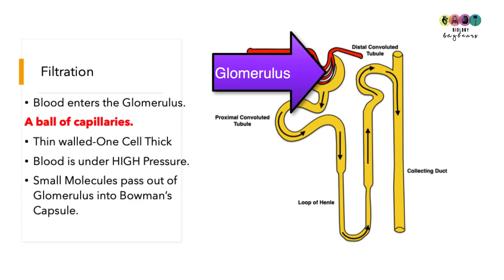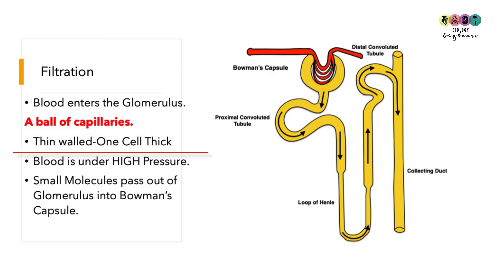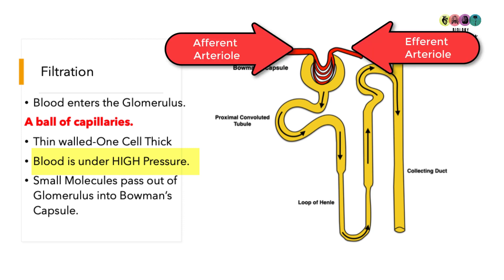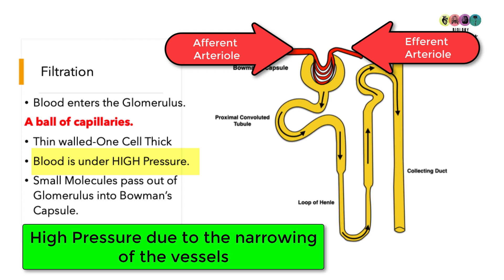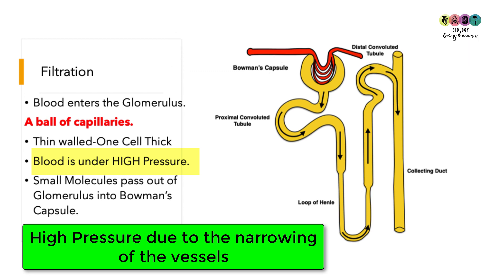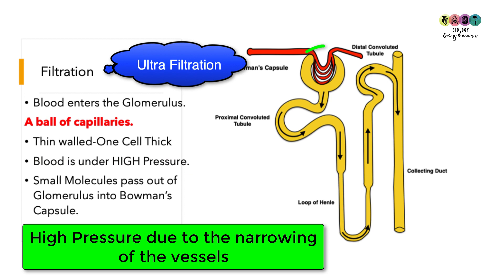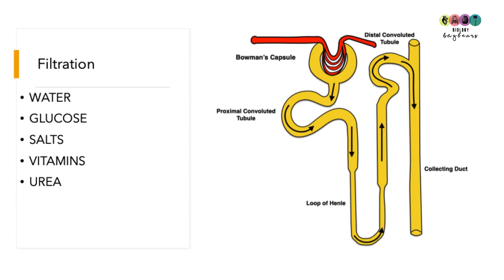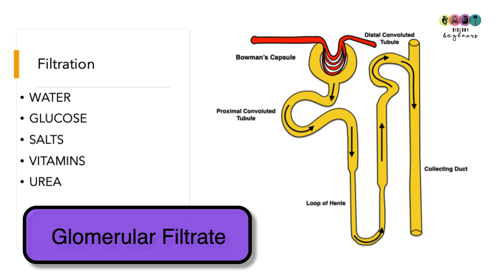Filtration takes place in the glomerulus, a ball of capillaries sitting in Bowman's capsule. Capillaries are only one cell thick, and blood in the glomerulus is under high pressure — partly due to the narrowing from the afferent to the much narrower efferent arteriole. Because of this high pressure, filtration is also called ultrafiltration. Substances forced out of the blood form the glomerular filtrate: water, glucose, salts, vitamins, urea, and amino acids. Blood cells and large plasma proteins remain in the blood.